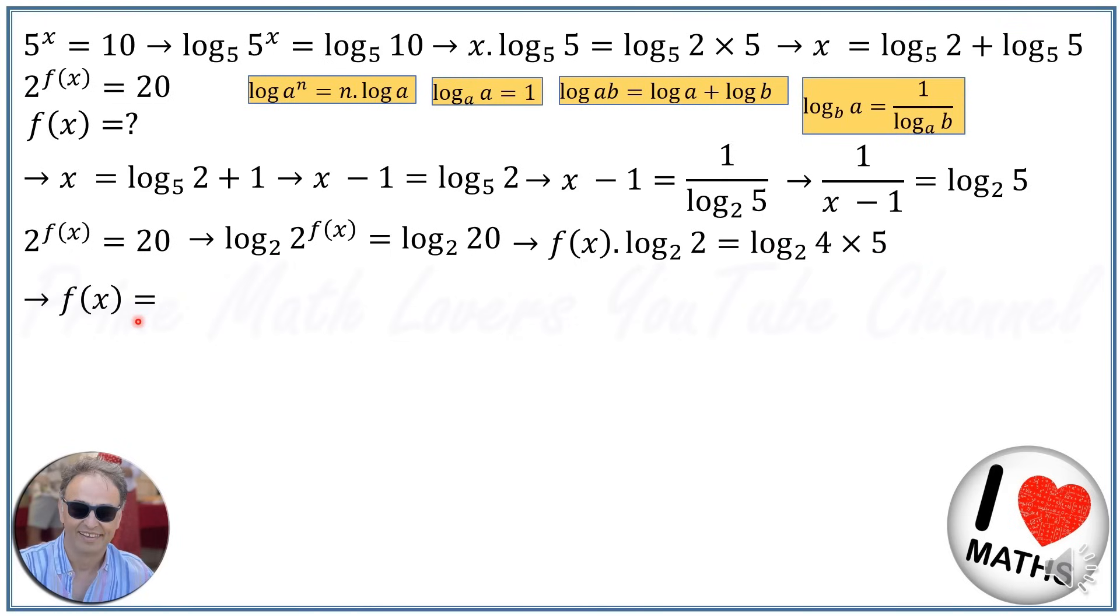If I replace 4 by 2², I'll have f(x) = log₂(2²) + log₂(5). Again, I apply the magic exponent rule, so we'll have 2·log₂(2) + log₂(5). And again, we know that log₂(2) = 1. So f(x) will be 2 + log₂(5).